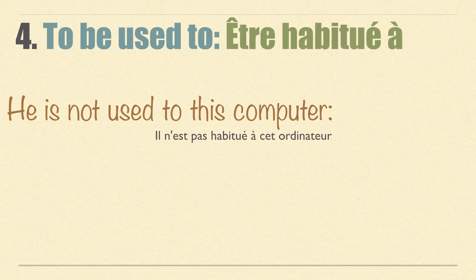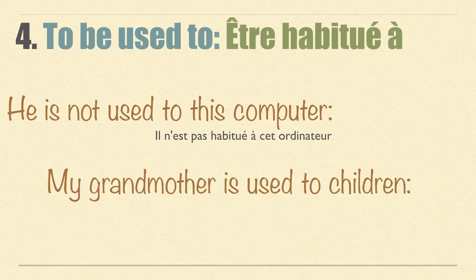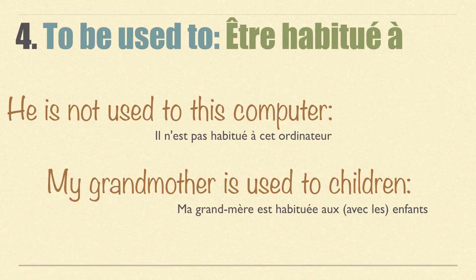Both expressions are really common — with avoir or with être. For example: 'My grandmother is used to children' — ma grand-mère est habituée aux enfants. You can also say avec les enfants. Note the preposition is à, and aux is the plural contracted form of à + les.